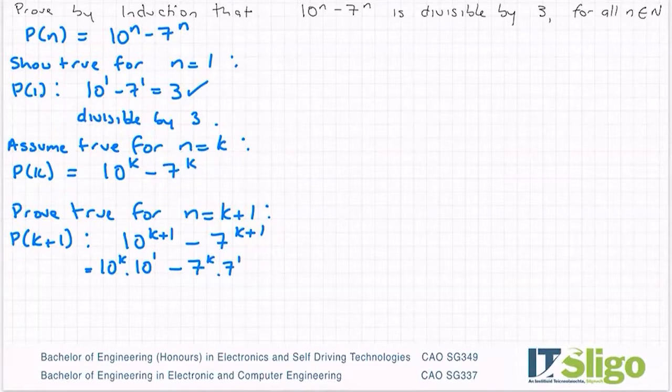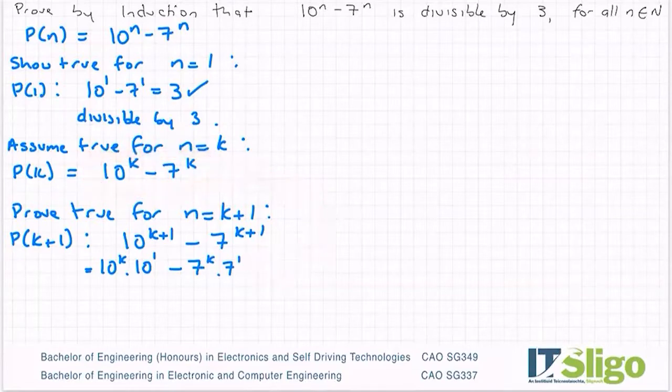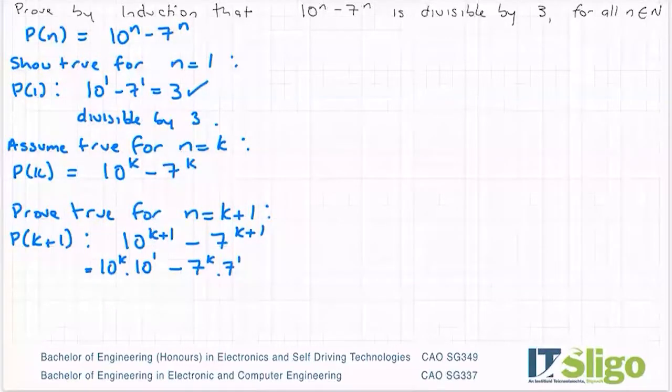So I'm looking at that now and normally at this stage I would be looking to sub in p of k into this expression. It's not the easiest to do because of the minus in between and the fact that I have coefficients in front of them. So there's another way we can get at p of k plus 1 and that's to take the expression for p of k plus 1 and subtract off that p of k.